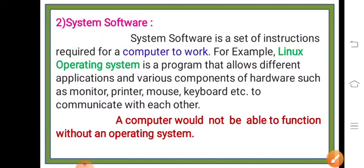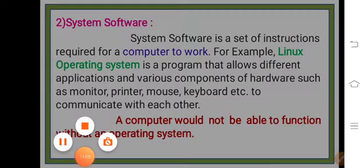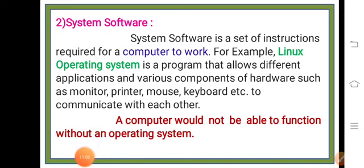The second type of software is system software. System software is a set of instructions required for a computer to work. For example, the Linux operating system is a program that allows different applications and various components of hardware — such as a monitor, printer, mouse, keyboard, etc. — to communicate with each other.